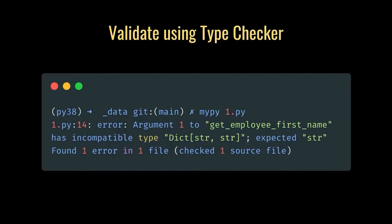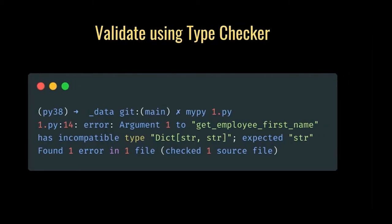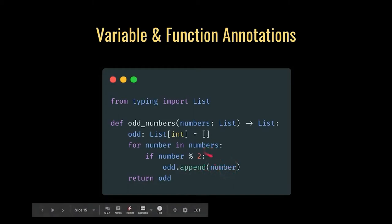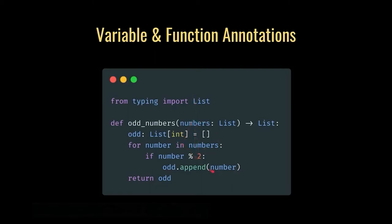Let's also understand how variable and function annotation works. There's a function called odd_numbers that takes numbers as a List argument and also returns a List. The odd variable is defined as a list of integers. If I try to append something that is not an integer and run the code through mypy, I'll get an error saying I'm trying to append a non-integer value. Variable annotations and function annotations help you catch those bugs well ahead of time.